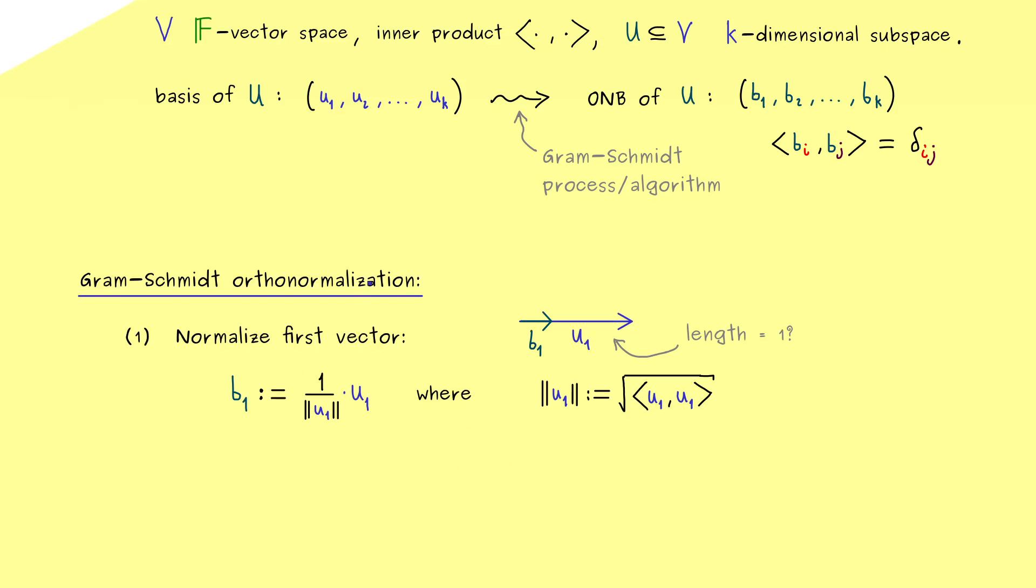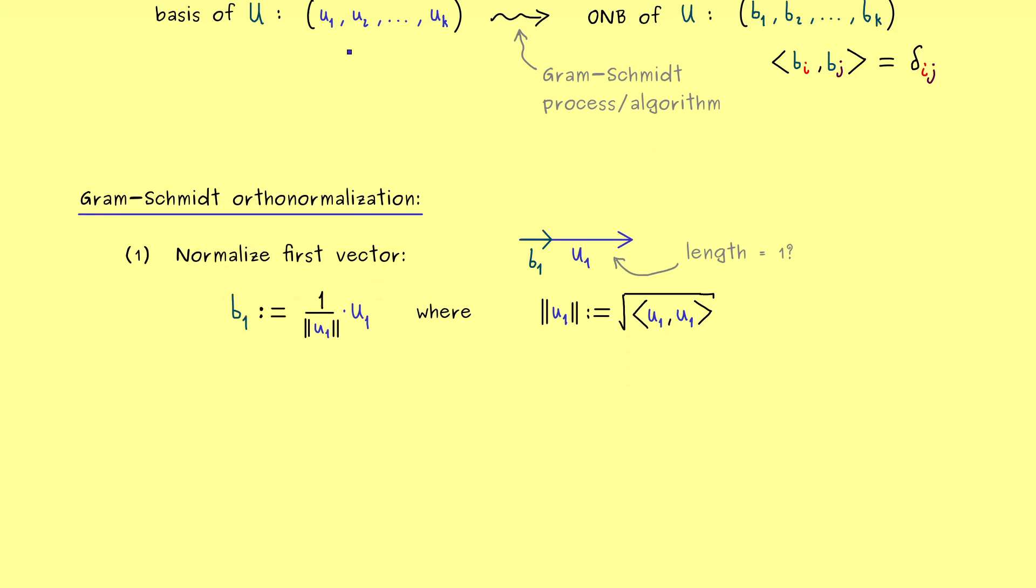And then we can immediately go to the second vector u₂. Therefore this is just step 2. Hence the picture here is not so complicated. We just have the vector b₁ and u₂ goes in some other direction. Indeed we know they have to span a two-dimensional subspace. However, now we want to find b₂, which is orthogonal to b₁. And you should already see how we can do that. We just have to calculate the orthogonal projection of u₂.